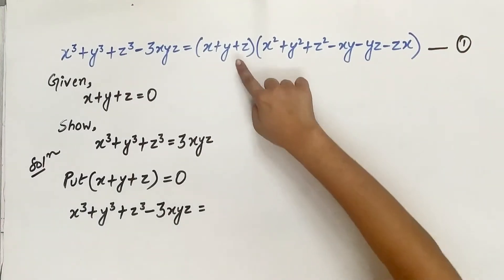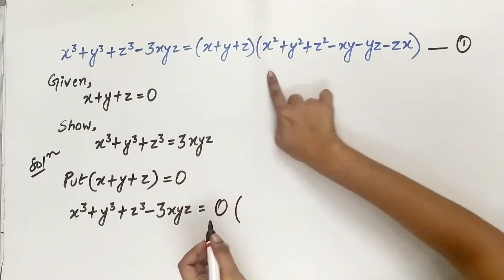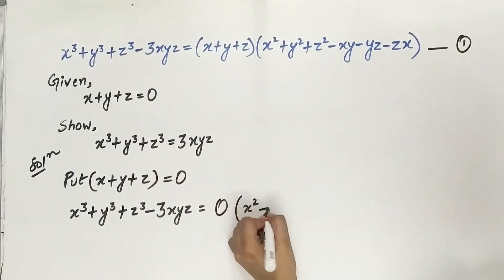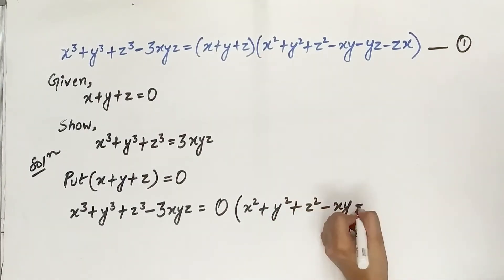Now x plus y plus z is equal to 0. The remaining is x squared plus y squared plus z squared minus xy minus yz minus zx.